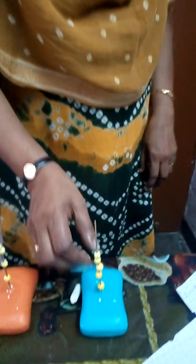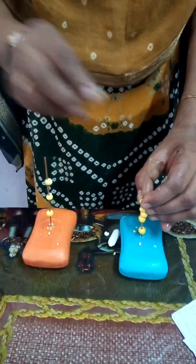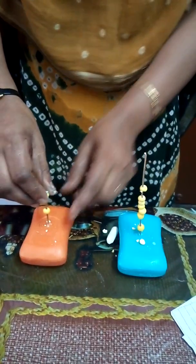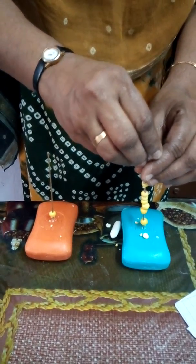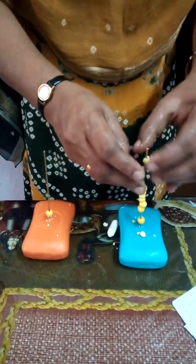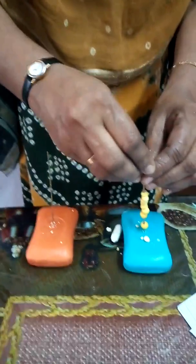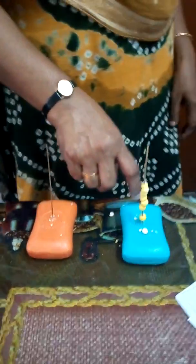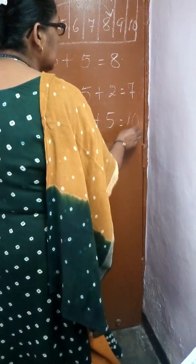Look here: 1, 2, 3, 4, 5, 6, 7, 8, 9, 10. So, 5 plus 5 — it is equal to 10. What is the answer? 5 plus 5 is equal to 10.